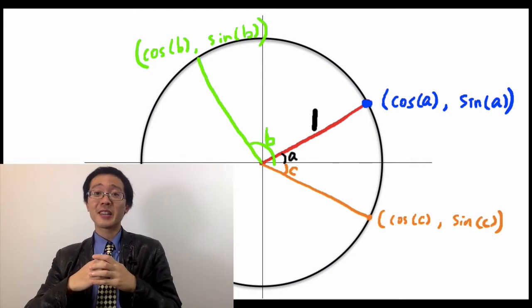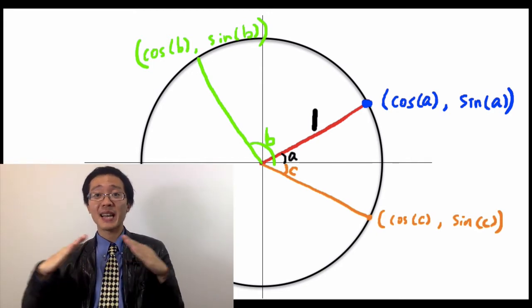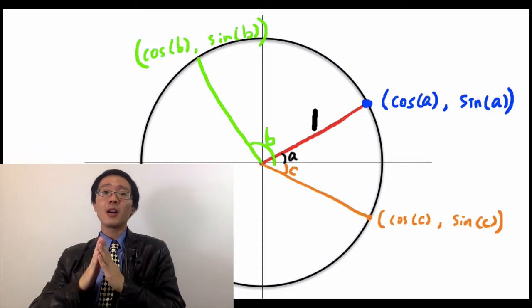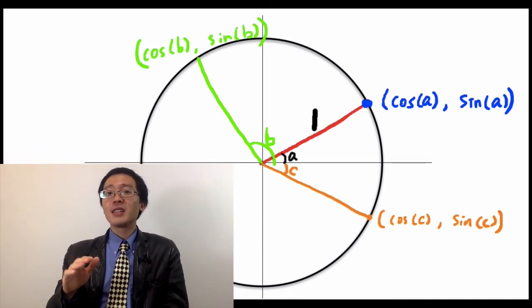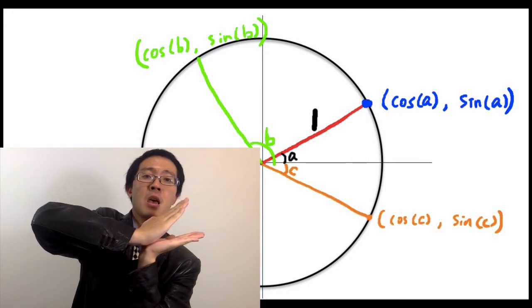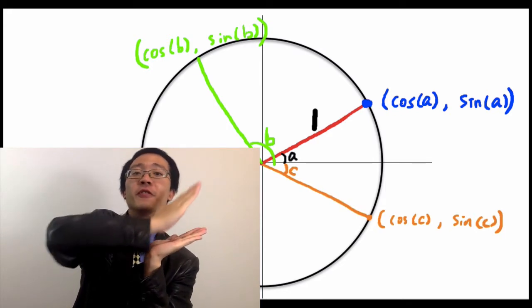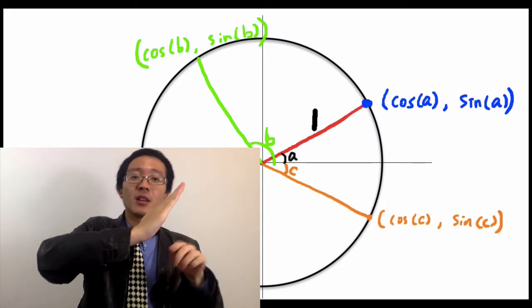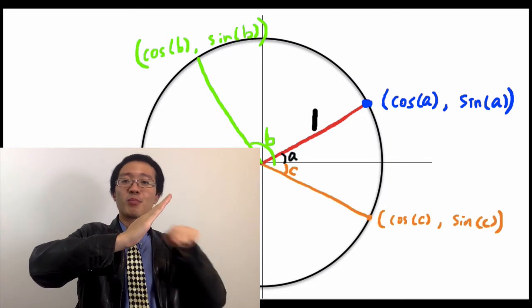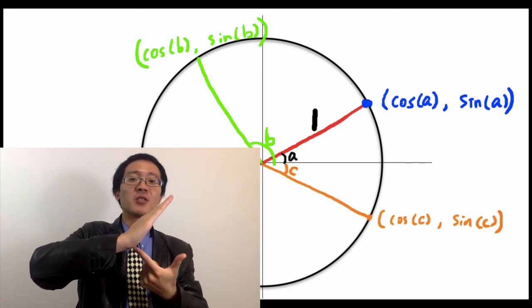So our trig function started out as a relationship between angles and sides on the right triangle, and now it powered up. With these definitions, you can take an angle, think of it as direction of a vector on a plane, and get the horizontal and vertical components of this vector using cosine and sine.